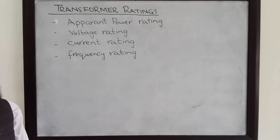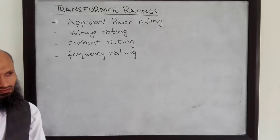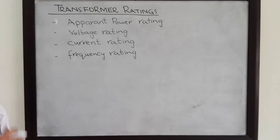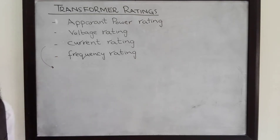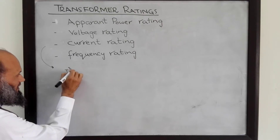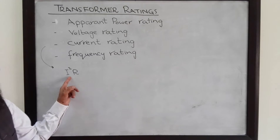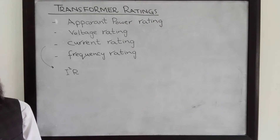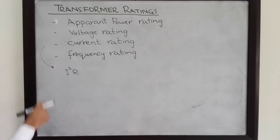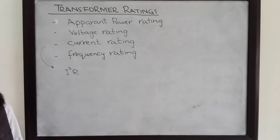The maximum current that the transformer can handle is described by these ratings. Basically, when current flows in the windings of the transformer, it produces heating in the transformer. There is a resistance of copper winding, and when current flows through the windings of the transformer, there are I²R losses. These losses are in the form of heat, and if there is excessive heating, that may melt down the windings of the transformer and thereby damage the transformer. Therefore, there is a limit on the maximum current that can be handled by the transformer, and this is described by the current ratings.